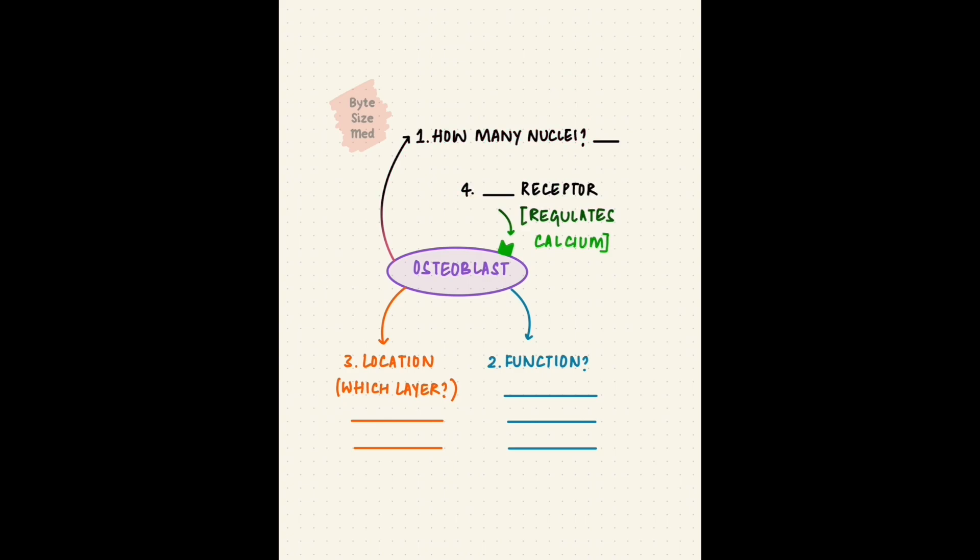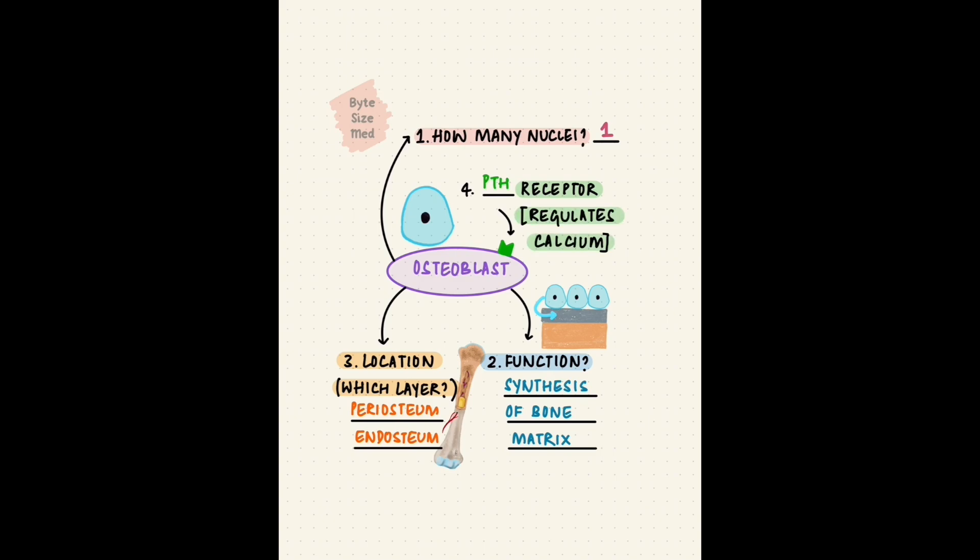Time's up. The osteoblast has a single nucleus, unlike the osteoclast. Its main function is the synthesis of proteins for the bone matrix. It's located in the periosteum and endosteum layers of bone, and it has a receptor for parathyroid hormone, which is an important calcium regulating hormone. That's an important bone cell.